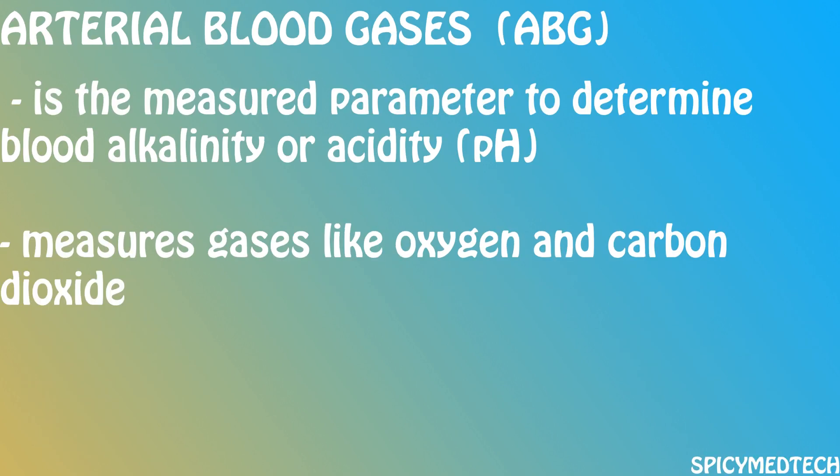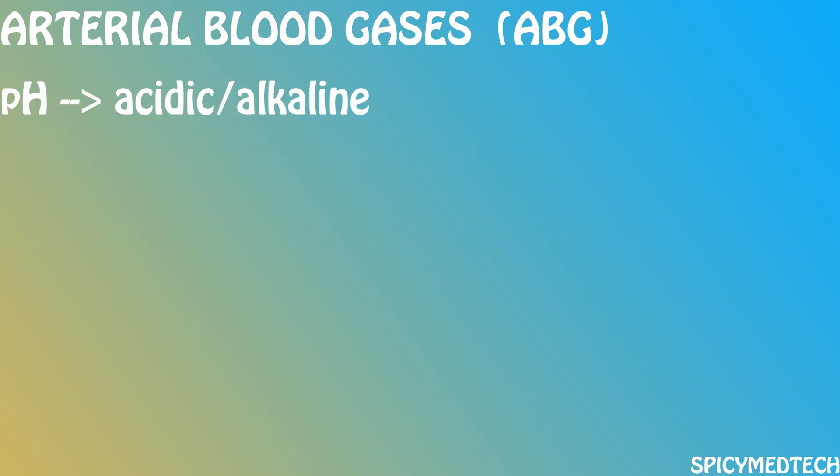Arterial blood gases, or ABG, is the measured parameter to determine blood alkalinity or acidity by measuring its pH. It also measures gases like oxygen and carbon dioxide in the blood. The first parameter is pH, which tells us how acidic or alkaline an arterial blood sample is.